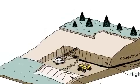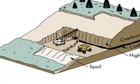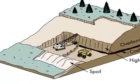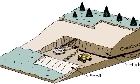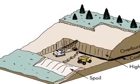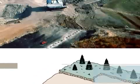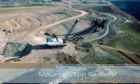This essentially forms a wedge in the side of the hill. The overburden is removed in a similar manner and is replaced afterwards back into its original position.